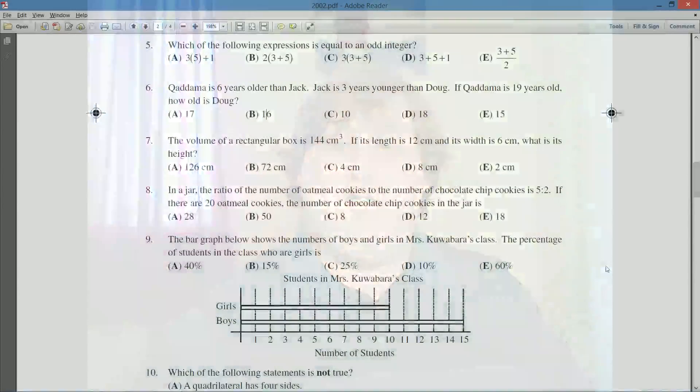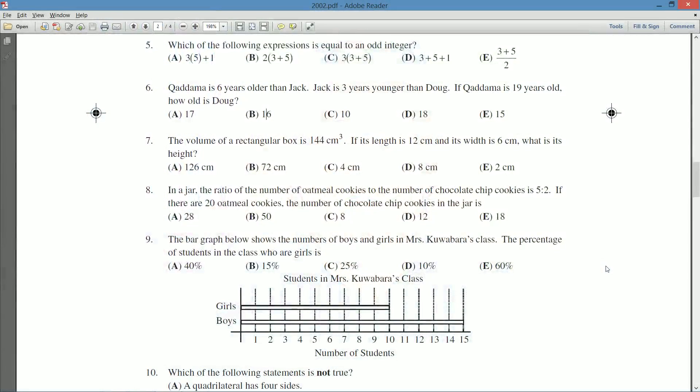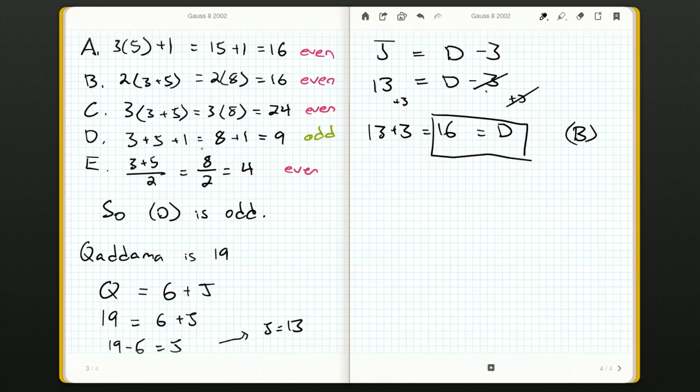We're going to take a look at question number seven. What does it have to say? The volume of a rectangular box is 144 centimeters cubed. If its length is 12 centimeters and its width is 6 centimeters, what is its height? Let's draw ourselves a little picture. The key to this question is knowing how volume relates to length, width, and height.